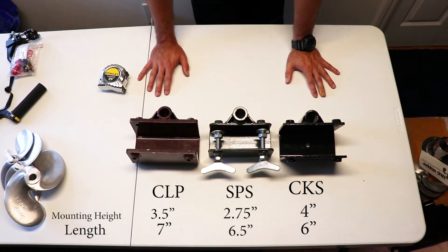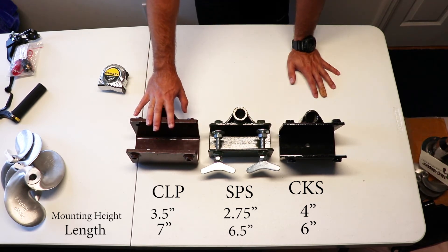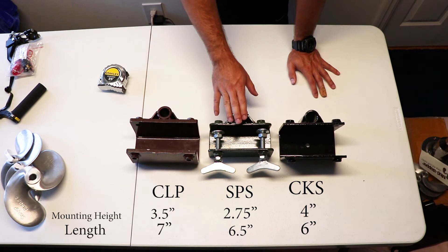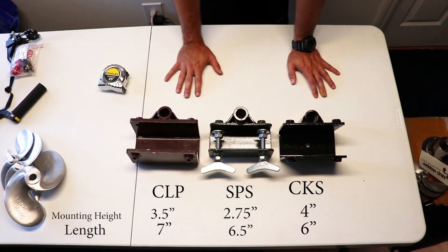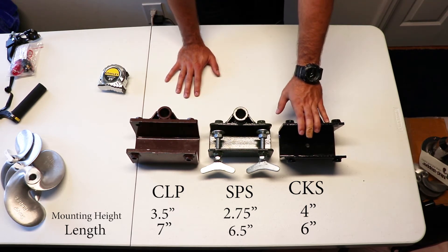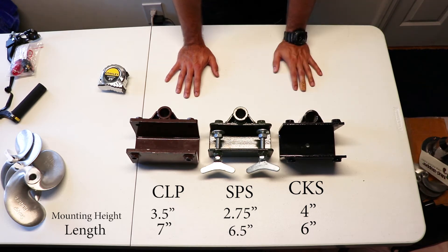Real quick, if you don't know yet, CLP is Beaver Dam Mud Runners, SPS is Swamp Runner Mud Kits, and then CKS is Mud Skipper Kits.